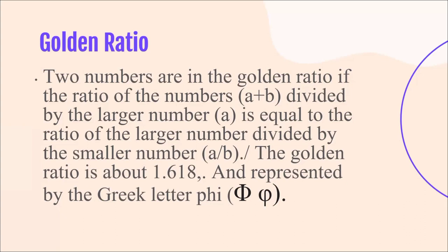The Golden Ratio is about 1.618 and is represented by the Greek letter phi — that's the symbol you can see below. In short, the sum of two numbers, when divided by the larger number, is equal to the result when the larger number is divided by the smaller number.